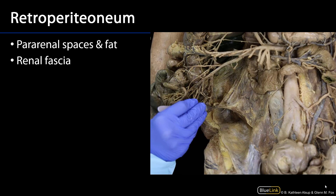In particular, with respect to this session, we'll show you the anterior and posterior pararenal spaces, as well as the perirenal space. The pararenal spaces are the regions of the retroperitoneum which are found superficial to the renal fascia.